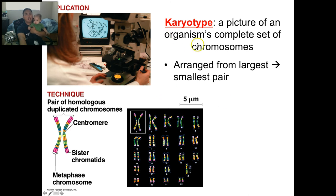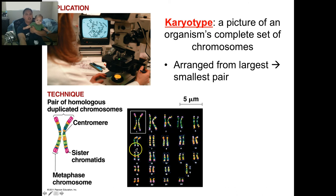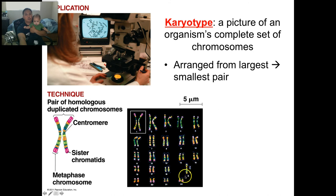A karyotype is a complete picture of all your chromosomes, arranged from largest to smallest. Here's the first pair, second pair, third, fourth, fifth, all the way up to 22, and then the last pair is either XX or XY. In this particular one you have XY. The colors are coded for different genes, and you can see which ones are homologous chromosomes because they're the same length.